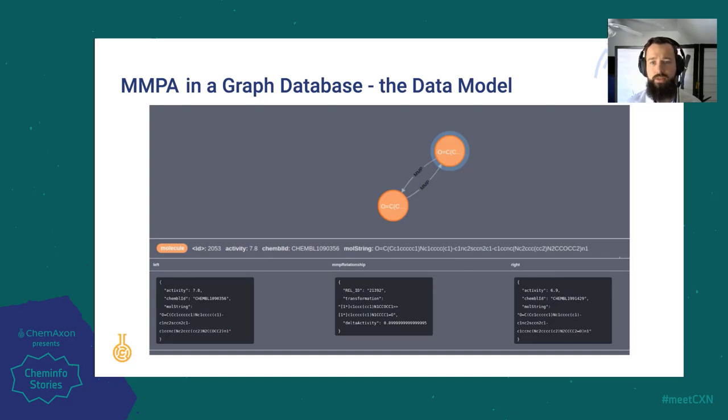Transformations were then added as relationships. We used the SMARTS strings to map from one compound to another. Another important property is the delta activity, which is stored as a property of the relationship. We decided to create two one-way relationships to represent the transformation to enable the exploration in both the positive and negative direction.